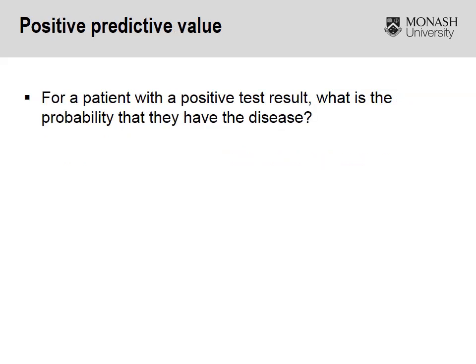In the previous video we focused on sensitivity and specificity, and one of the limitations we highlighted was that sensitivity and specificity only relate to the test itself. It doesn't provide us with any information regarding whether or not a patient has an increased or decreased probability of having a disease. This is where predictive values come into play.